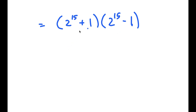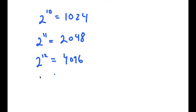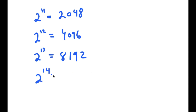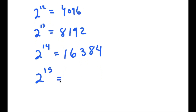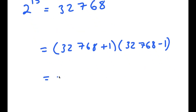Now, what is 2 to the power of 15? Well, 2 to the power of 10 is 1,024. So 2 to the 11 is 2,048; 2 to the 12 is 4,096; 2 to the 13 is 8,192; 2 to the 14 is 16,384; and 2 to the 15 is 32,768. So I have 32,768 plus 1 times 32,768 minus 1, which is 32,769 times 32,767.